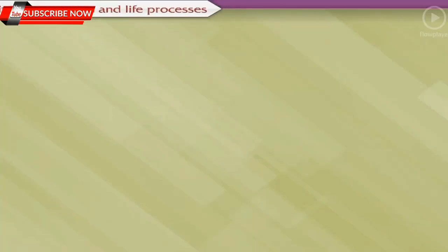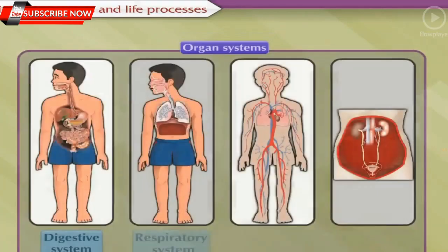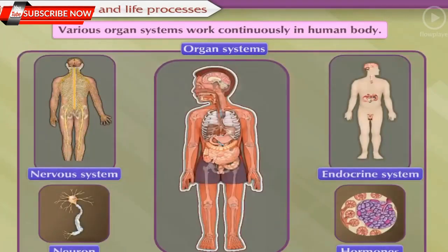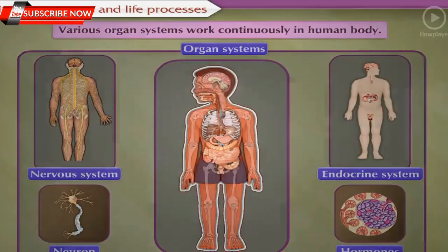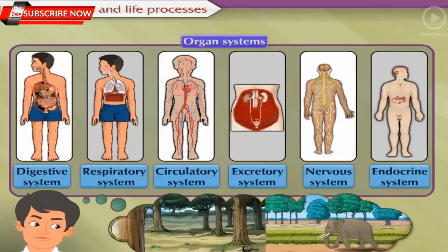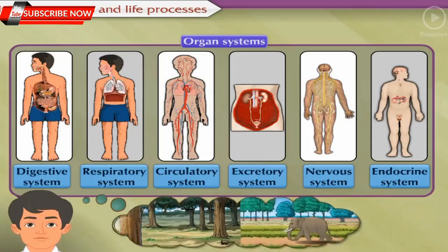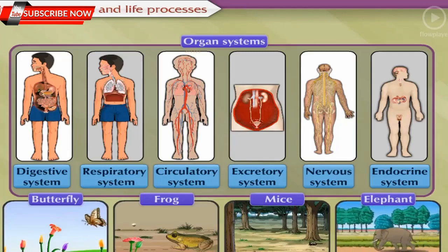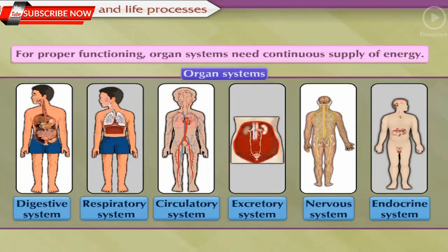Living organisms and life processes: we have seen that various organ systems like digestive, respiratory, circulatory, excretory, and control systems work continuously in the human body. These systems, along with different external and internal organs, perform their functions independently but through complete coordination. Are these systems the same in a small animal like a mouse and a big animal like an elephant? Yes, all systems work more or less in a similar way in these organisms, no matter whether they are small or big.